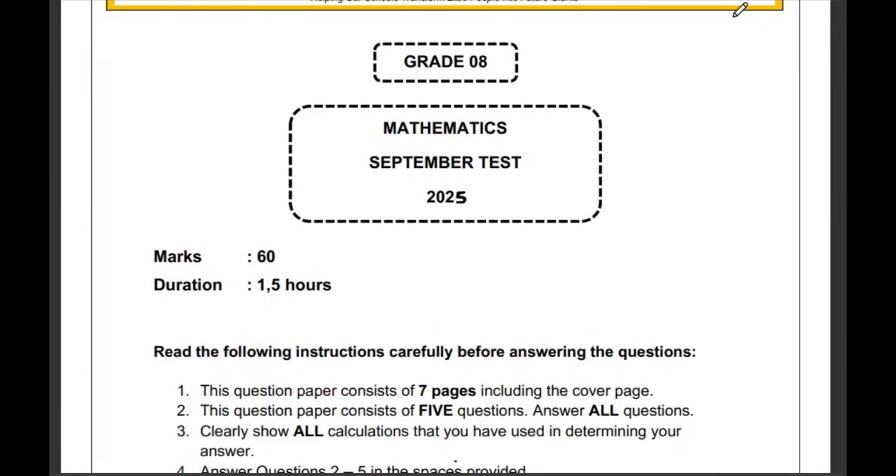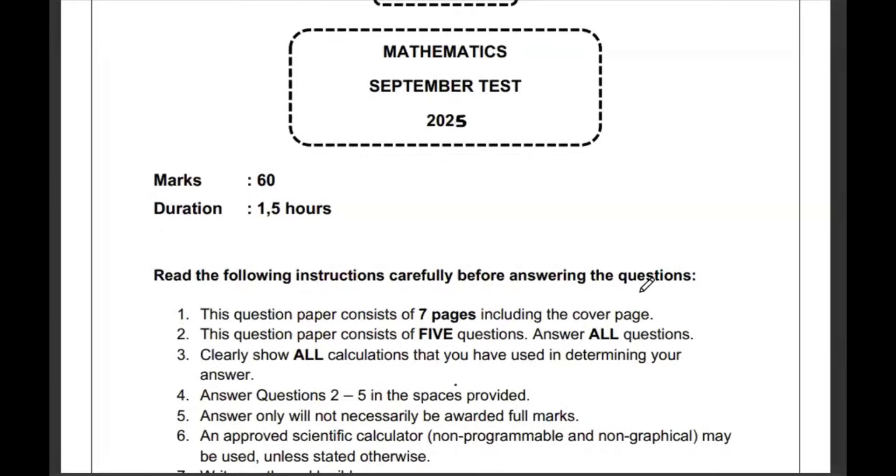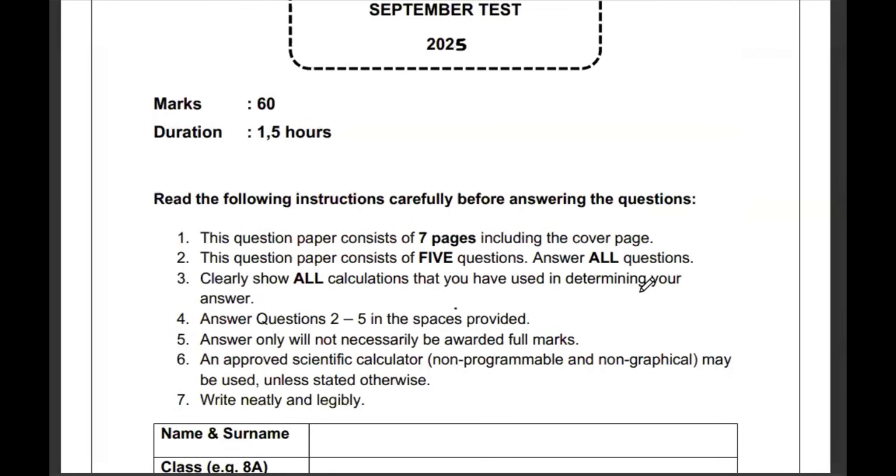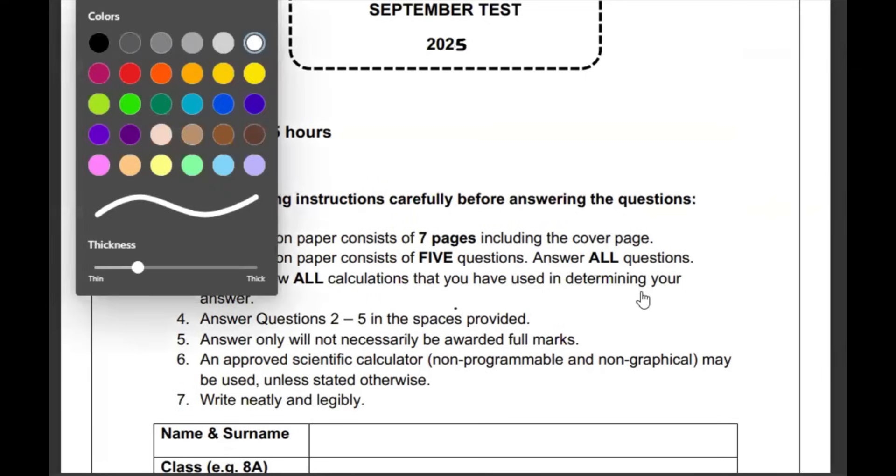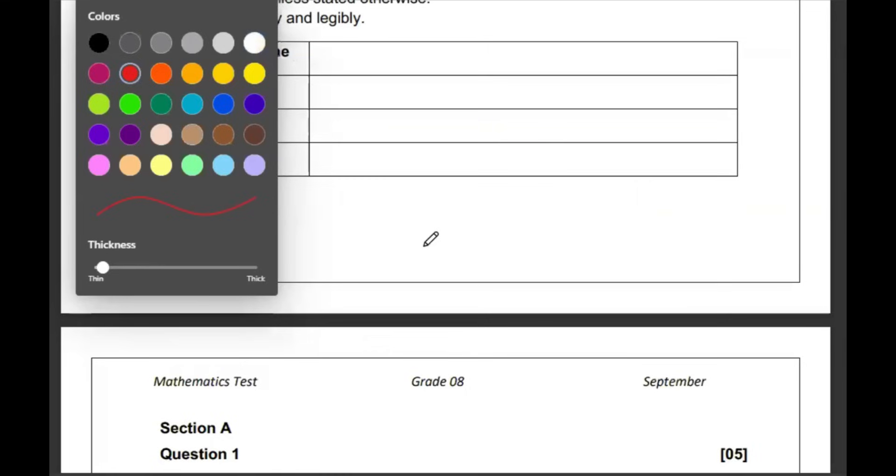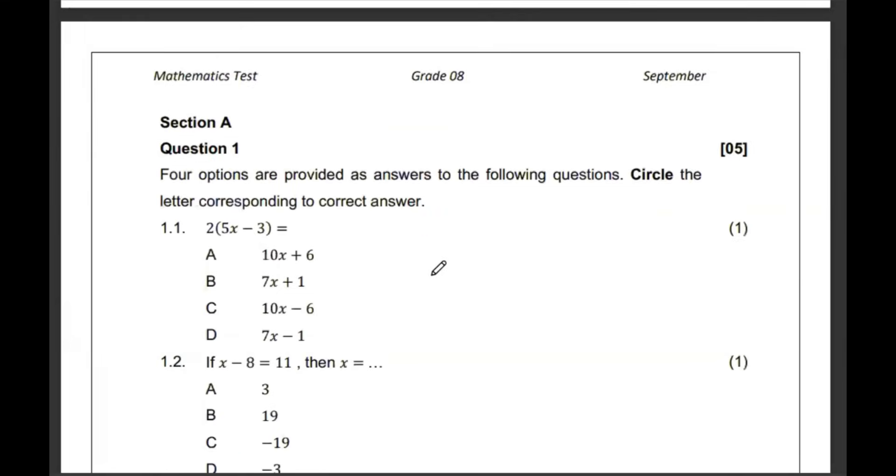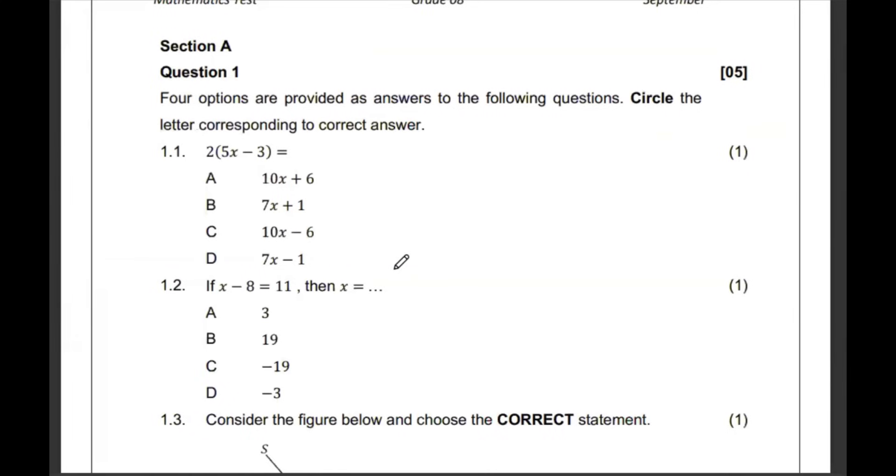Looking at the proposed memorandum of the grade 8 mathematics test, September 2025. We have seven pages and five questions and we have to answer all of them. When I look at the first question of section A, they are telling us that four options are provided. The answers, we need to circle the correct one.